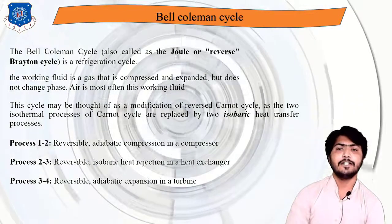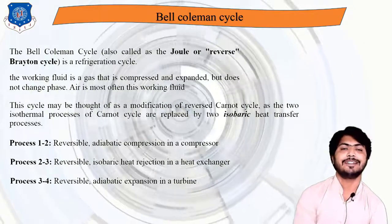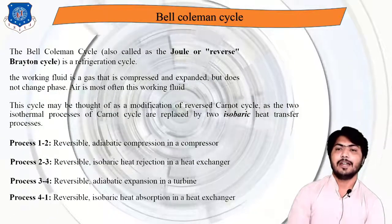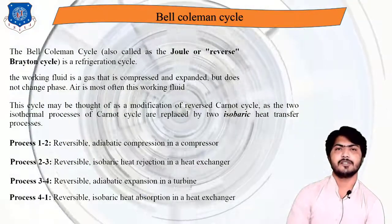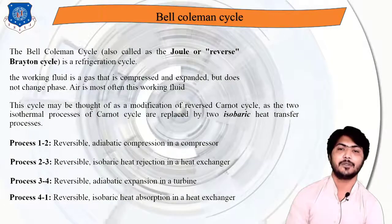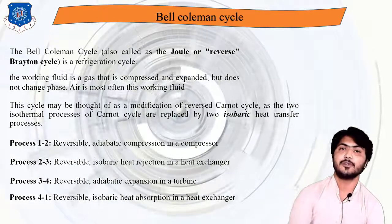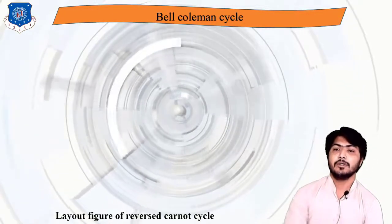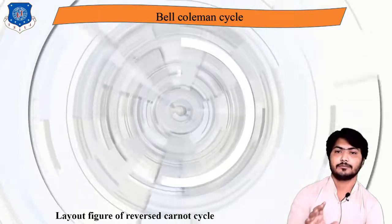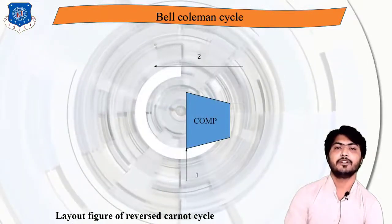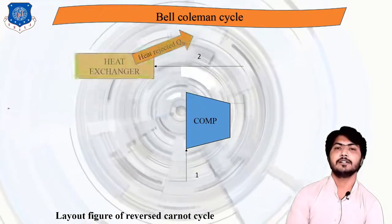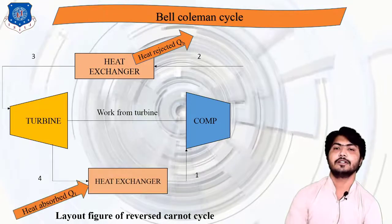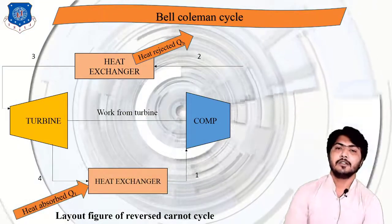Process 3 to 4 is reversible adiabatic (isentropic) expansion in the turbine. Process 4 to 1 is reversible isobaric heat absorption, where heat is absorbed from the desired place to be cooled in a heat exchanger. So the layout is: 1 to 2 compressor, 2 to 3 heat exchanger, 3 to 4 turbine, 4 to 1 heat exchanger.